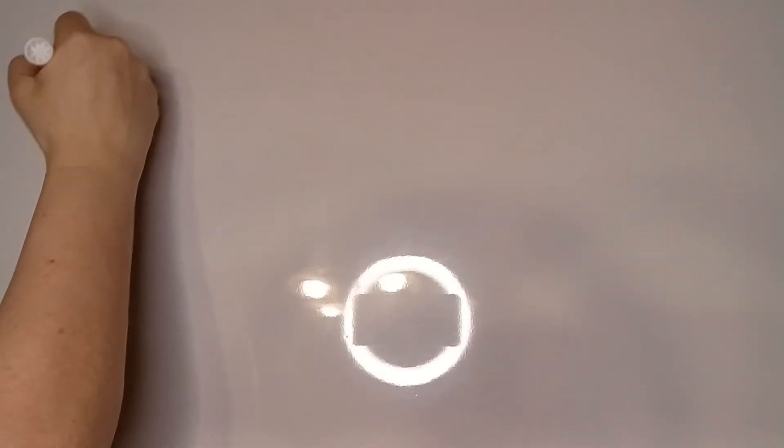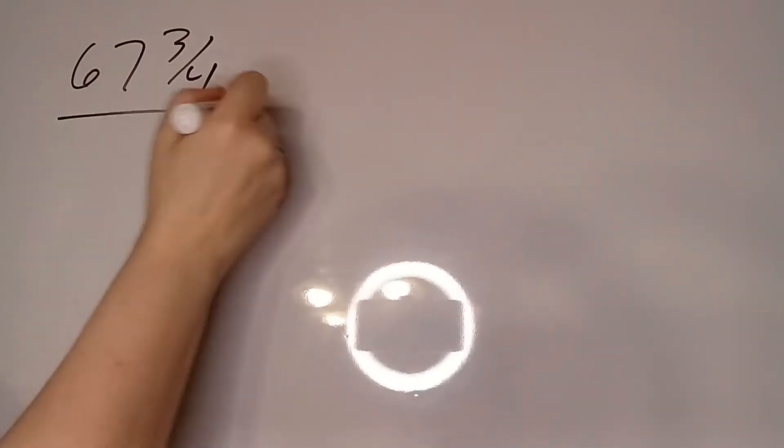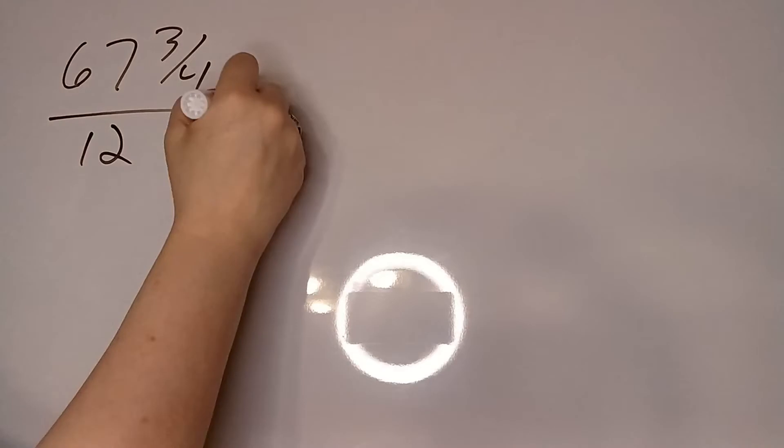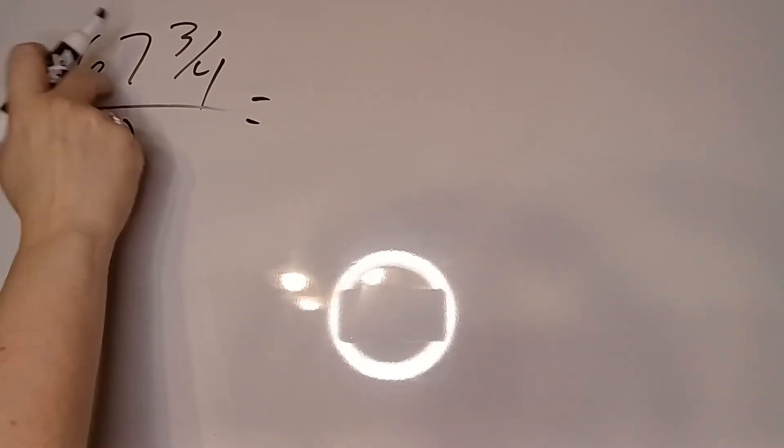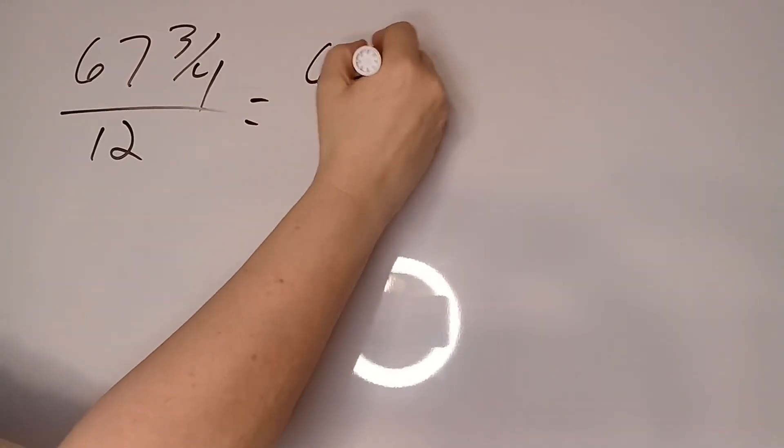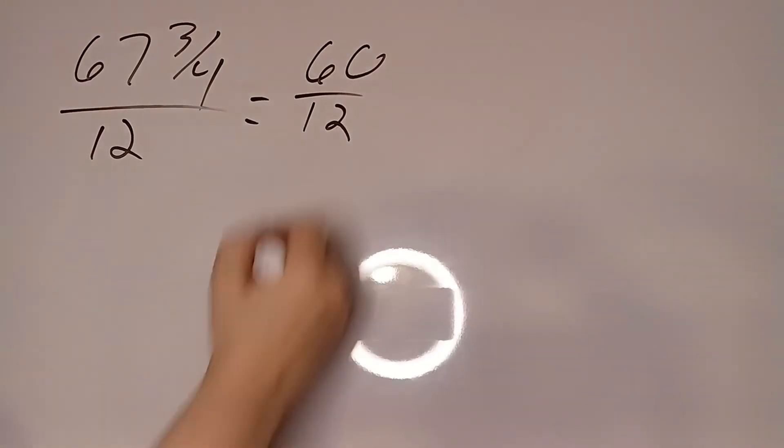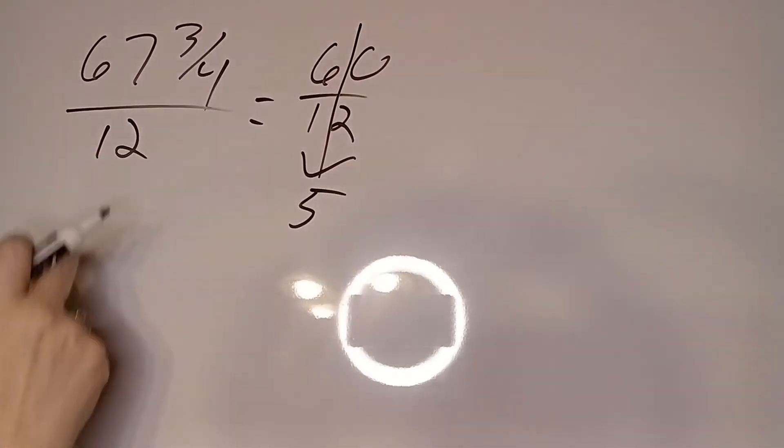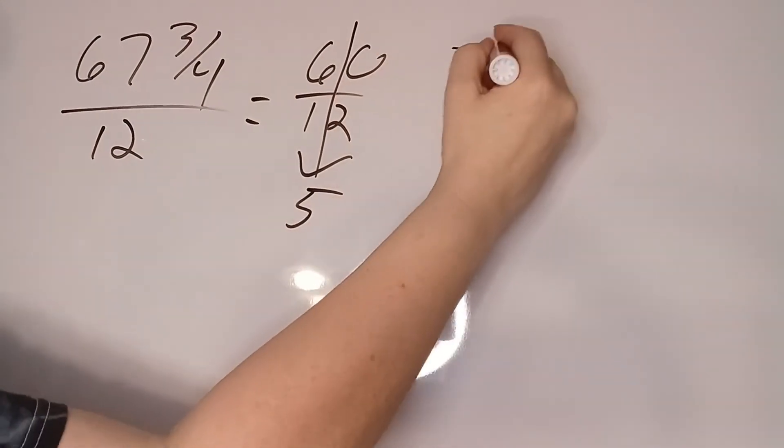Let's look at 67 and 3 fourths divided by 12. All right, we pulled the 60 out because we know that makes 5. There's 7 and 3 fourths left over.